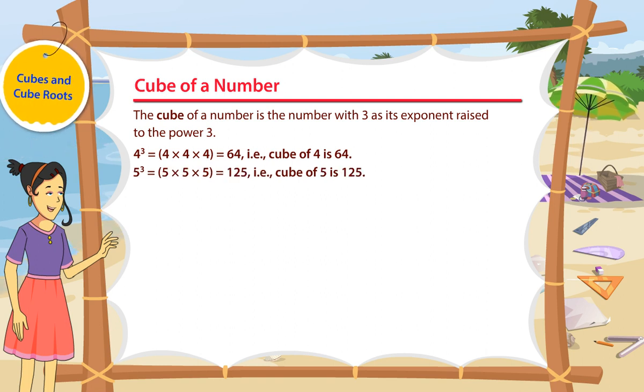Similarly, 5 cube is equal to 5 multiplied 3 times, that is, 5 × 5 × 5. So the cube of 5 is 125.